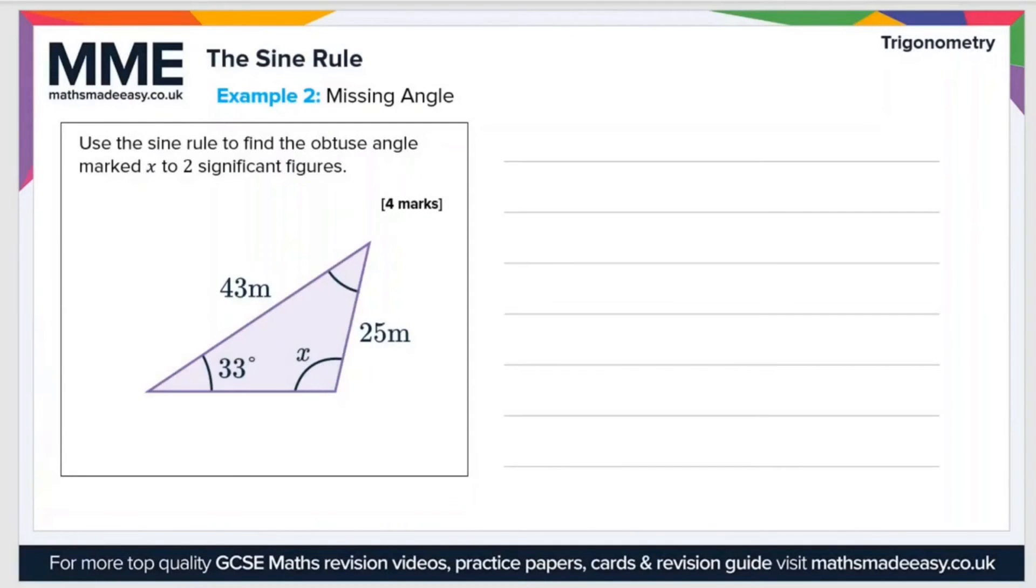Let's have a look at a second example of the sine rule. This time, we're finding a missing angle. Use the sine rule to find the obtuse angle marked X to two significant figures. Well, because it's an angle, I'm going to use the version of the sine rule that makes it easier to find angles. That's sine A over A equals sine B over B.